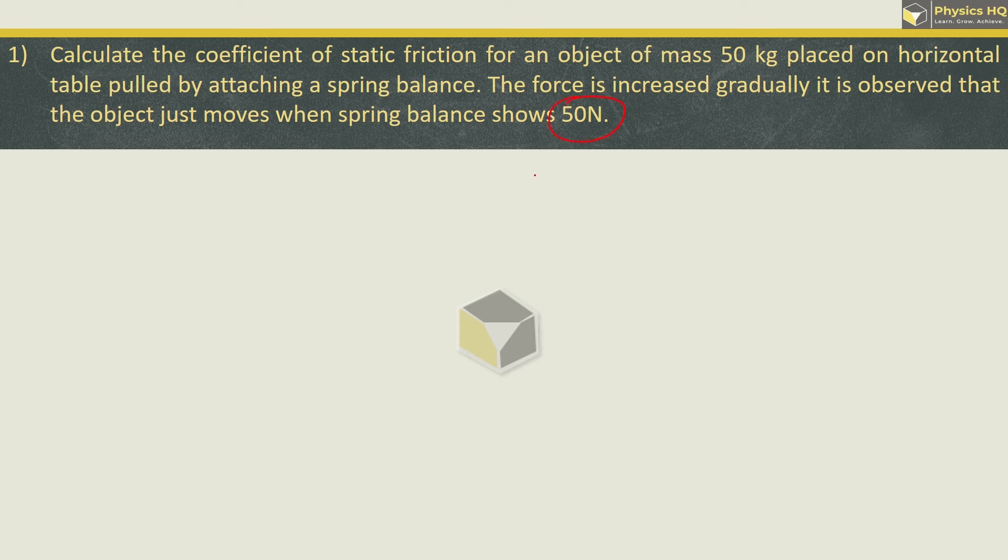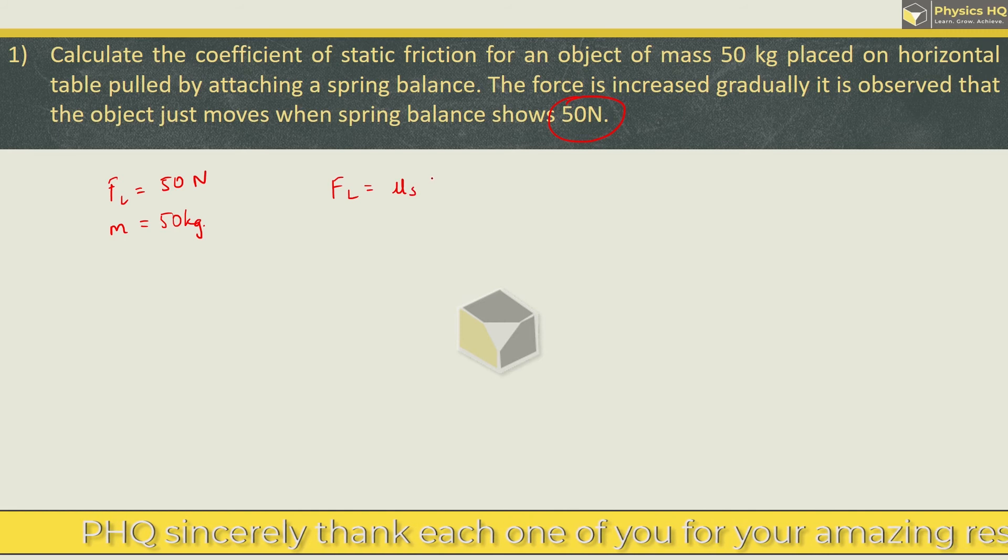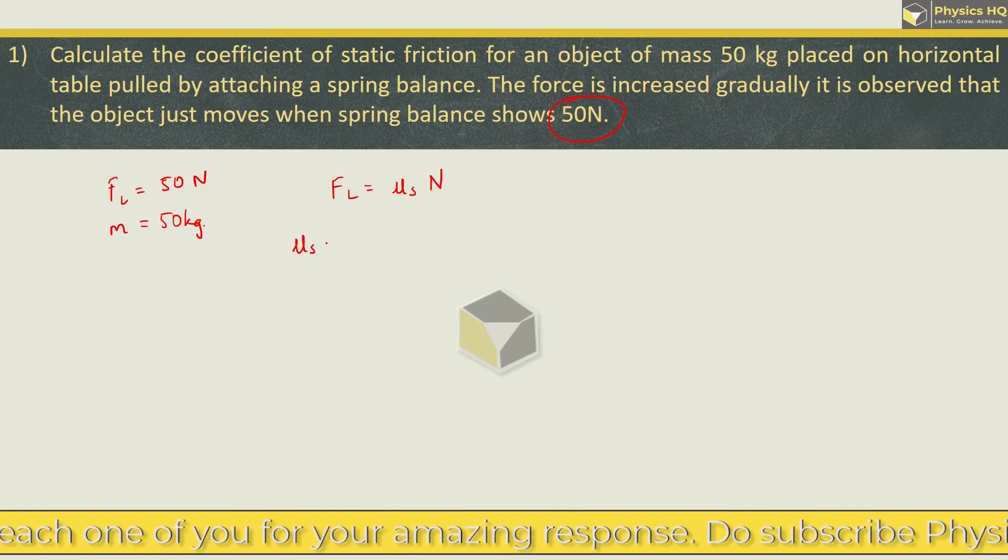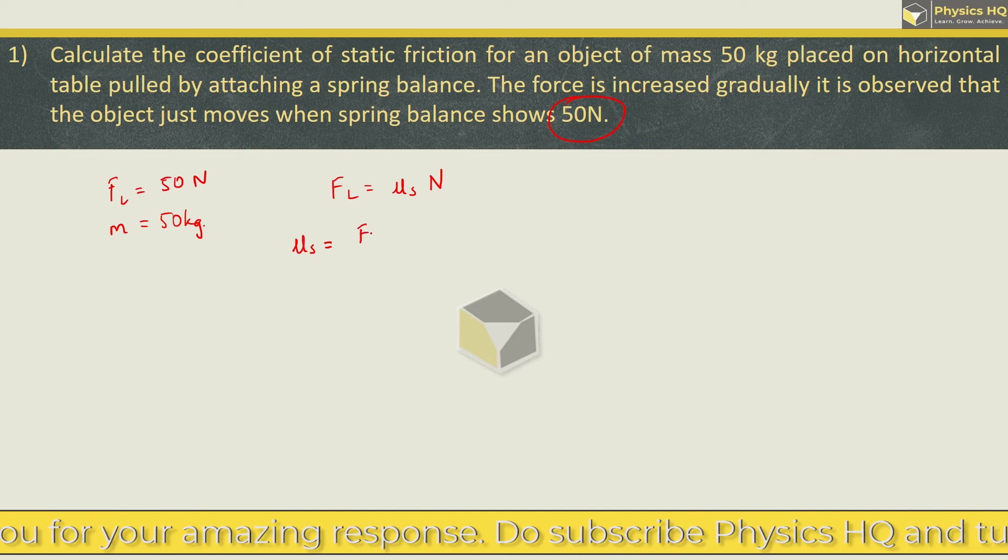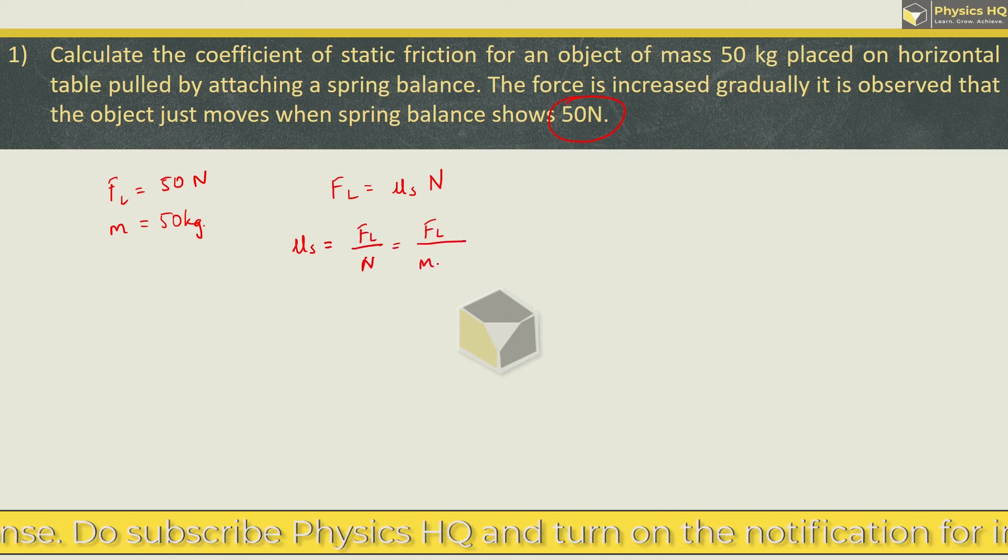What does this mean? This force is nothing but the limiting force, 50 N. The problem has given the mass of the object 50 kg. Now this limiting force is the coefficient of static friction into the normal reaction. If we have the coefficient of static friction, that is given by limiting force upon N. And this N is nothing but M into G.